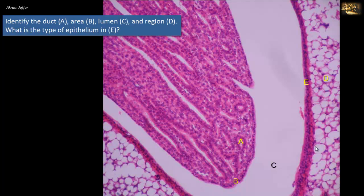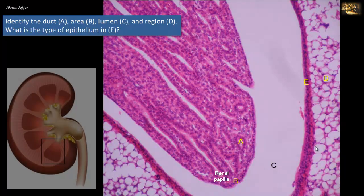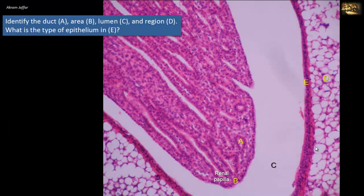Identify duct A, area B, lumen C, and region D. What is the type of epithelium in E? This section shows a renal papilla, represented in B. The renal papilla forms the apex of the medullary pyramid, where the base borders the cortex. The apex projects into the caliceal space shown in C — specifically, C is a minor calyx. The tubular structures marked by A, shown at the apex of the medullary pyramid, are the ducts of Bellini — the largest of the collecting ducts that converge in the renal papilla to discharge urine into the pelvic caliceal space C.